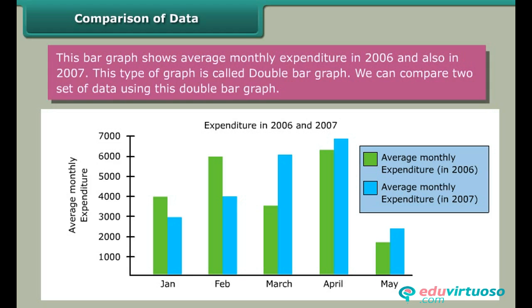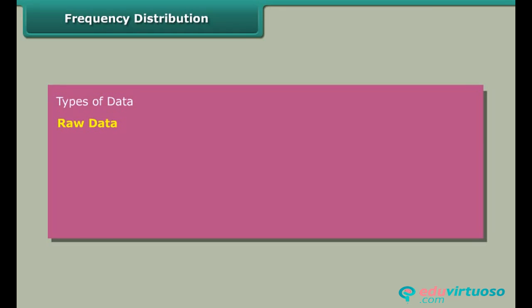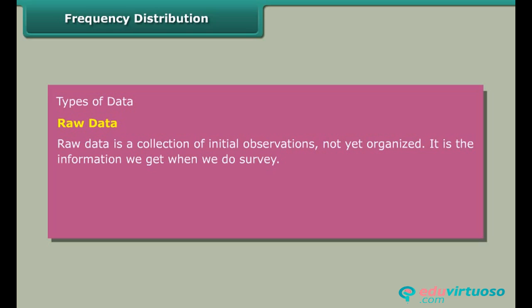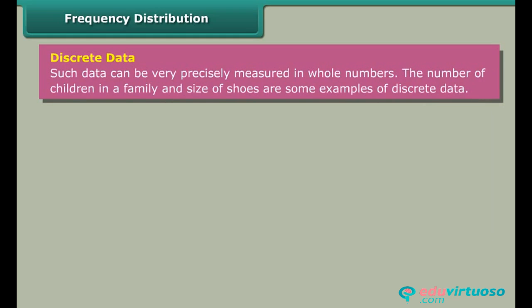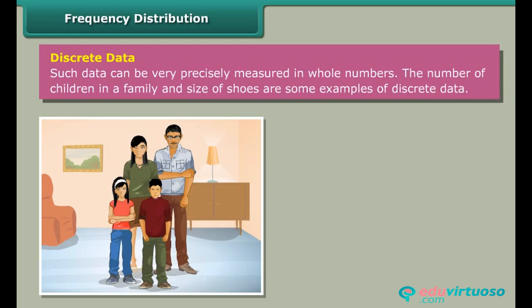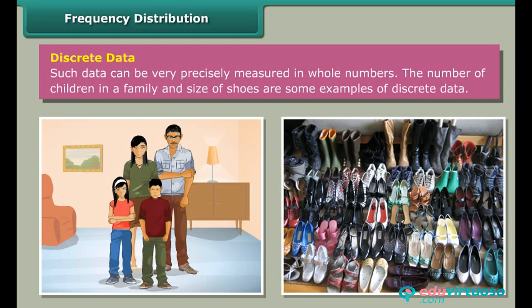Frequency distribution — Types of data: Raw data is a collection of initial observations not yet organized. It is the information we get when we do a survey. It can be classified into two types: discrete data and continuous data. Discrete data can be very precisely measured in whole numbers. The number of children in a family and size of shoes are examples of discrete data.